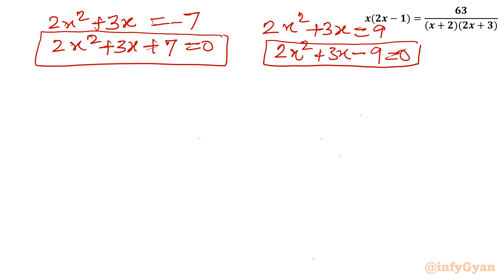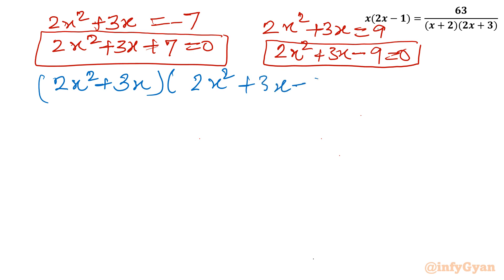Now let me take you through Method 2, which is the difference of squares identity method. Writing the original equation: (2x squared plus 3x) times (2x squared plus 3x minus 2) equal to 63. We substituted a equal to 2x squared plus 3x to reach those two quadratics — we will solve them shortly.